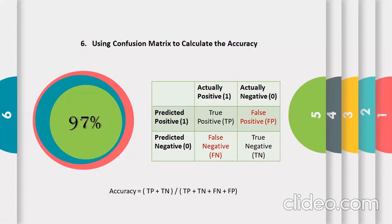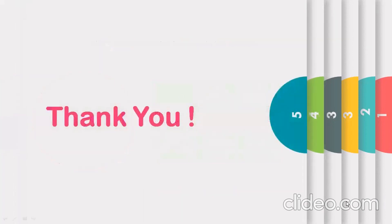97% accuracy is pretty good, but when dealing with human lives we can't take any chances — accuracy should be something around 100% or at least as close as possible. For that we need to tune our models and our data more so that we can get an accuracy closer to 100%. That brings us to the end of this presentation — I hope you guys liked it. A special thanks to Srija ma'am for organizing this, and I'd also like to thank the EC department for such great initiatives. Thank you!